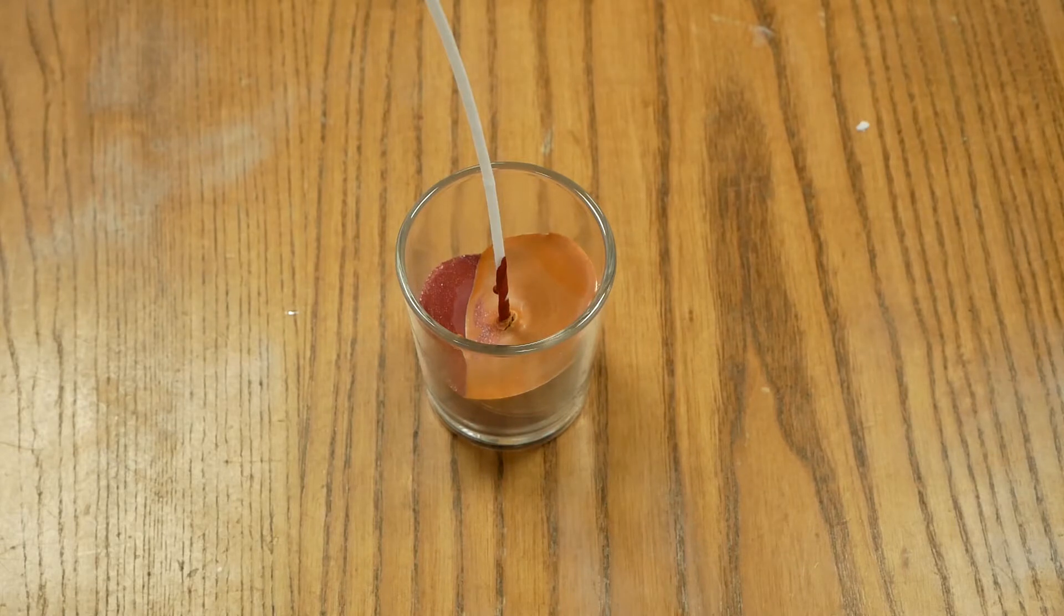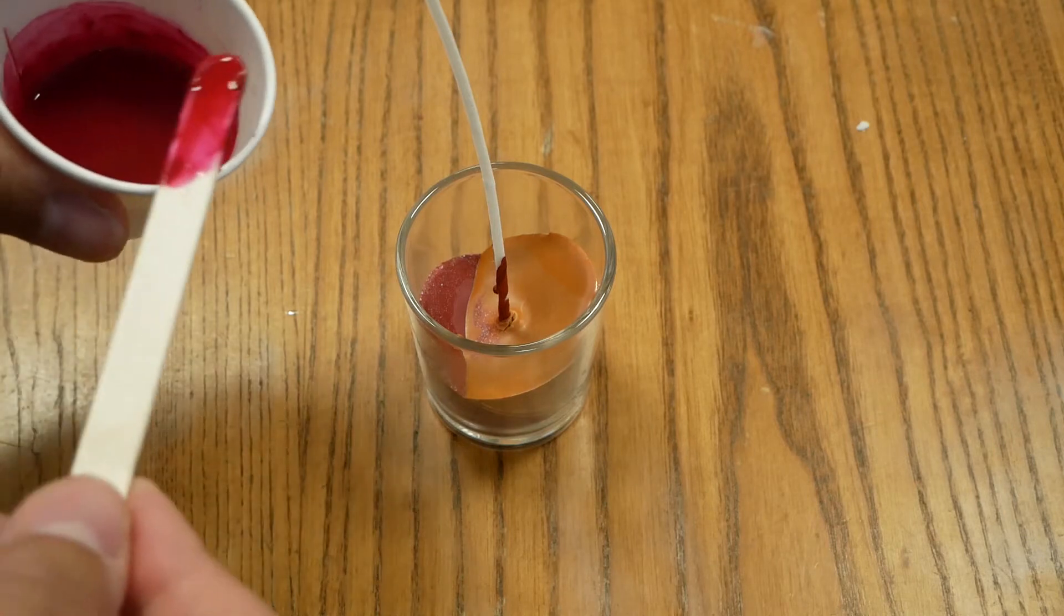For the third layer, you can take it off of the leaning stand and put it flat on the table, and then pour the last layer in.